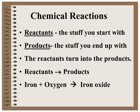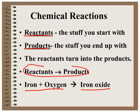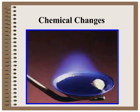Reactants are the stuff you start with; products are the stuff you end up with. So iron and oxygen are the reactants, iron oxide is the product, and the reactants are turned into the products by a chemical change.